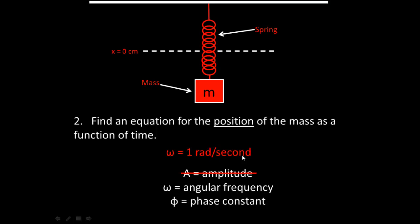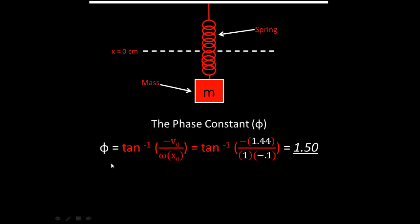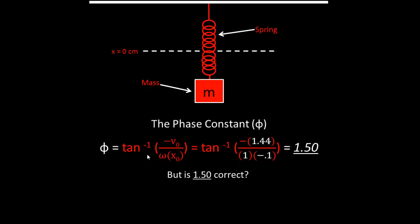Now we need to solve for the phase constant phi. The equation is phi equals the inverse tangent of negative initial velocity divided by (omega times initial position). Plugging in our values gives inverse tangent of 1.5, so phi equals 1.5 radians. However, we must check whether this is correct, since inverse tangent only returns answers in the first or fourth quadrant — our answer may actually be in the second or third quadrant.